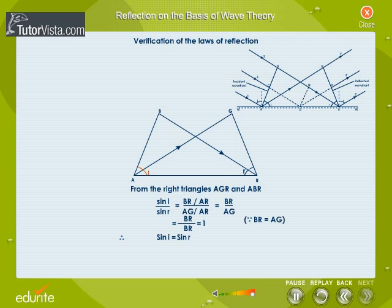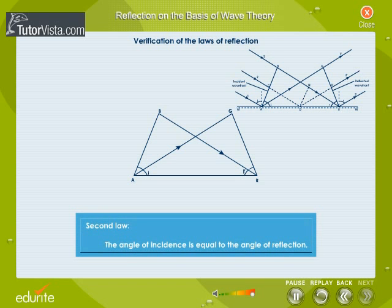Therefore, Sine I is equal to Sine R. Or, angle I is equal to angle R. Thus, the angle of incidence is equal to the angle of reflection. This proves the second law of reflection.